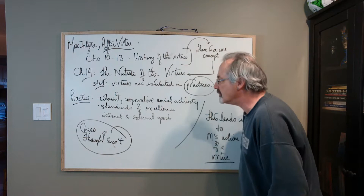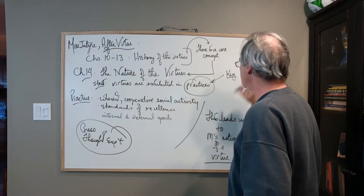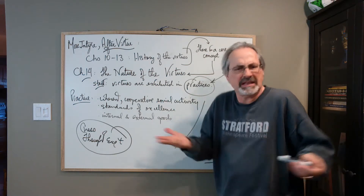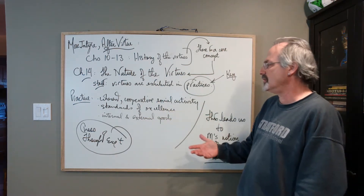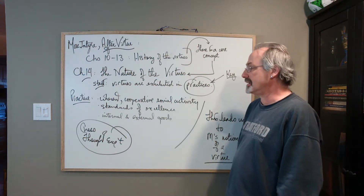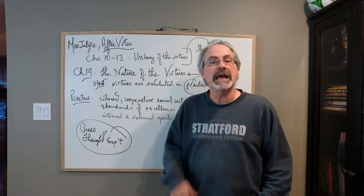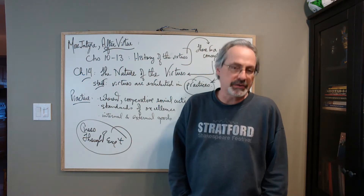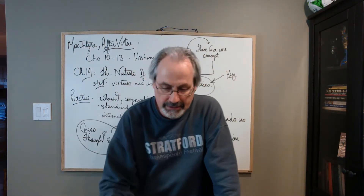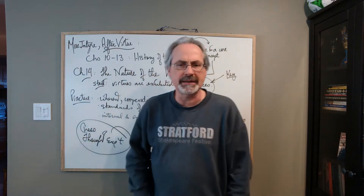Pulling out this core concept from history and articulating it in chapter 14 gives us what MacIntyre thinks is the nature of the virtues. He says we're going to start with the notion that virtues are exhibited in practices. The term 'practice' is a key term for MacIntyre. A practice is basically a coherent, cooperative kind of human social activity. Practices have standards of excellence. Practices have internal and external goods. This sounds pretty abstract, so let's follow MacIntyre with a concrete angle on these things.